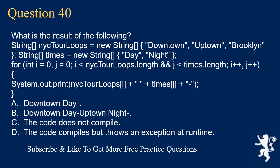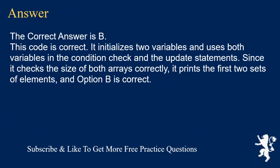Question 40. What is the result of the following? String[] nightTourLoops = {"Downtown", "Uptown", "Brooklyn"}; String[] times = {"Day", "Night"}; for (int i = 0, j = 0; i < nightTourLoops.length && j < times.length; i++, j++) { System.out.print(nightTourLoops[i] + " " + times[j] + "-"); } A. Downtown Day. B. Downtown Day, Uptown Night. C. The code does not compile. D. The code compiles but throws an exception at runtime. The correct answer is B. This code initializes two variables, uses both in the condition and update statements, checks the size of both arrays correctly, and prints the first two sets of elements. Option B is correct.